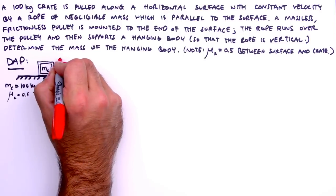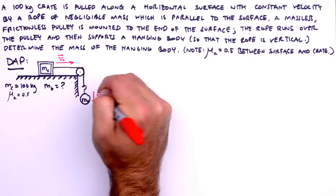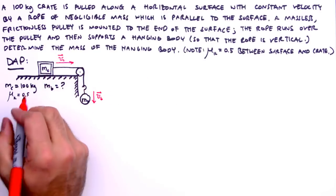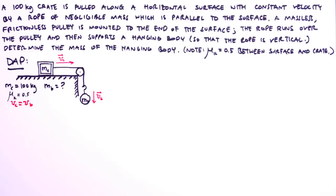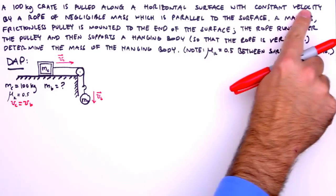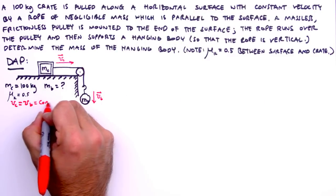Next, we'll indicate the directions of the velocity of the crate and the velocity of the hanging body. Since these bodies are connected via rope, we know that the magnitude of their velocities are the same. And we're told in the problem that the crate's velocity is constant, so we finish by writing equals constant.